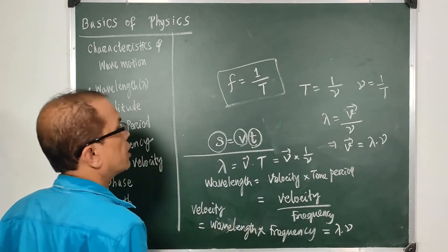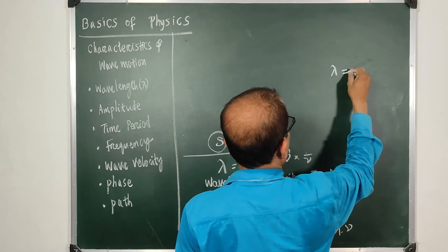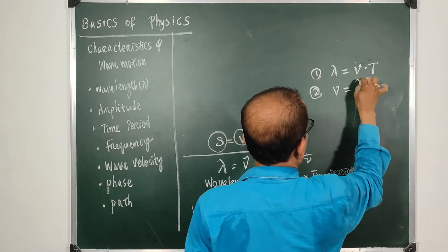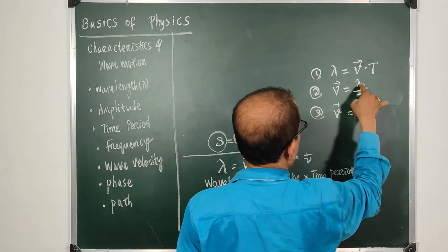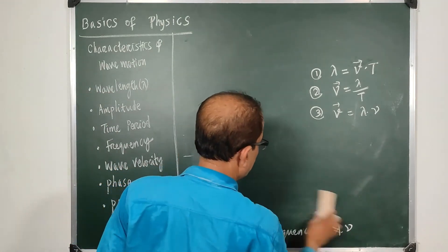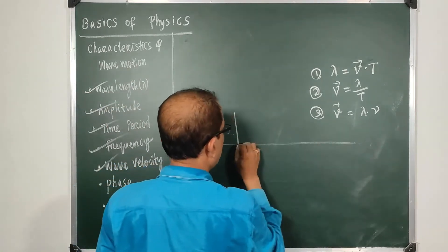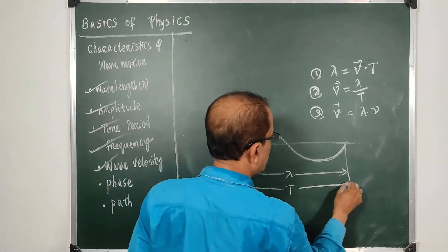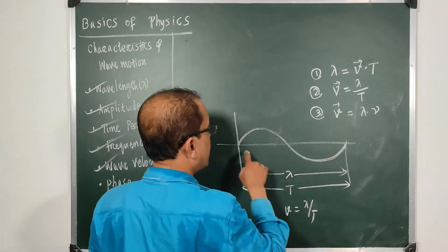To summarize the formulas derived: first, λ = v × T (wavelength equals velocity times time period); second, v = λ/T (velocity equals wavelength divided by time period); third, v = λν (velocity equals wavelength times frequency). Wave velocity is the distance lambda covered in time T, so v = λ/T.